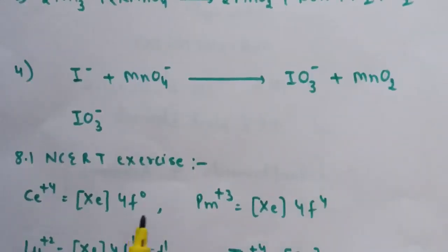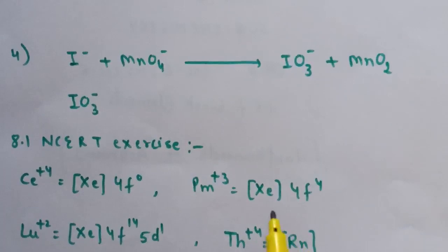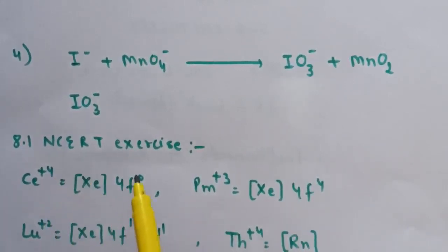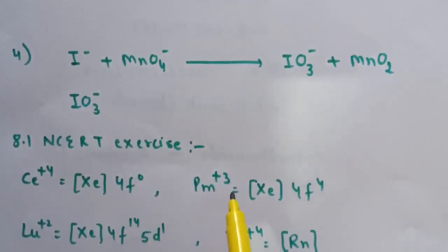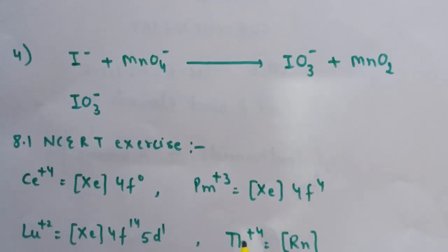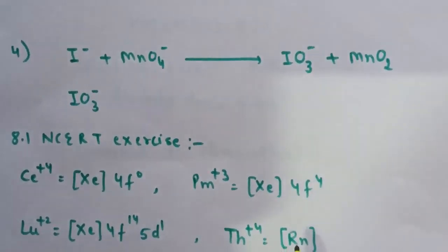Next: write down the electronic configuration for cerium +4, promethium +3, lutetium, and thorium +4. Cerium +4: [Xe] 4f⁰. Promethium +3: [Xe] 4f⁴. Lutetium: [Xe] 4f¹⁴ 5d¹. Thorium +4: [Rn] — noble gas configuration. These are the questions from lecture number 5. Thanks for watching, and please like and subscribe to this channel.